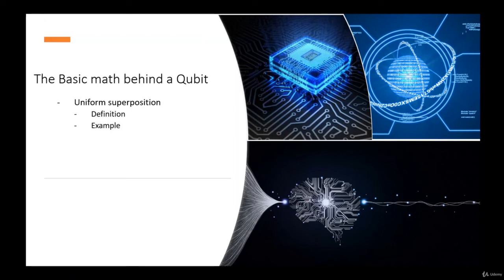To understand it better, take a basic example of one qubit. With a system with only one qubit, the uniform superposition will be a probability of one half of collapsing to state zero or state one. So there is a 50% chance of hitting zero or 50% chance of hitting one. This is uniform superposition, and the same calculation can be made for a higher number of qubits.